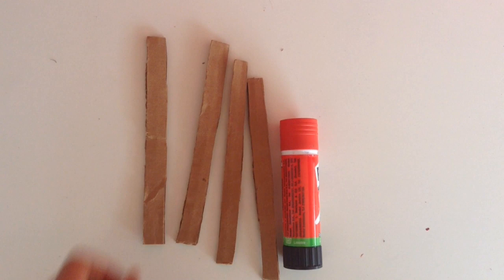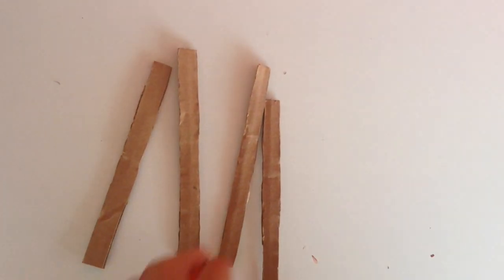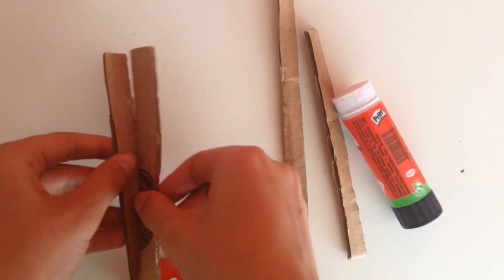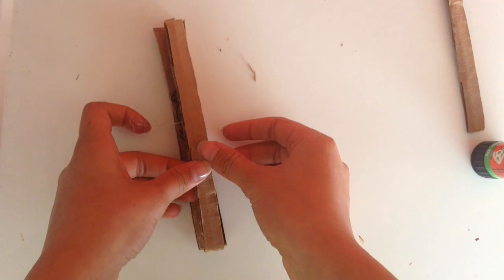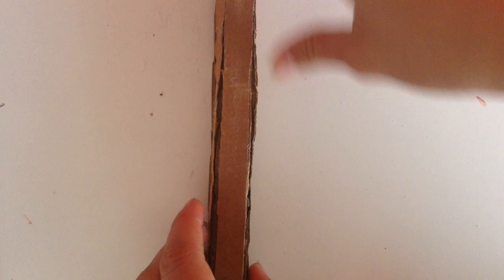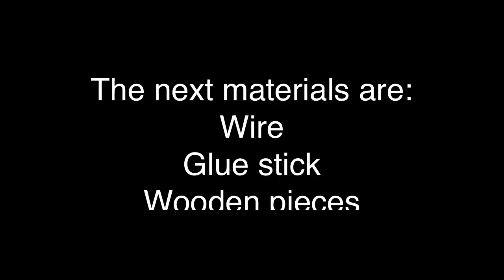Now you have to paste these rectangles to make a rectangular box. We have a total of nine pieces. Now you need the next materials.